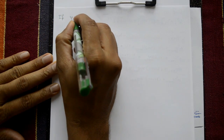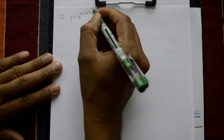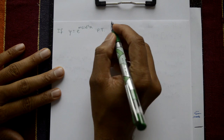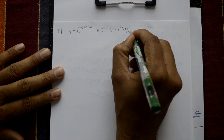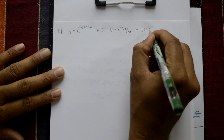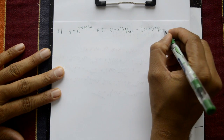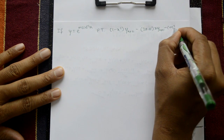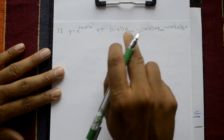If y is equal to e to the power m sine inverse x, prove that 1 minus x square into y_{n+2} minus of 2n plus 1 into bracket x·y_{n+1} minus m square plus n square into bracket y_n equal to 0.